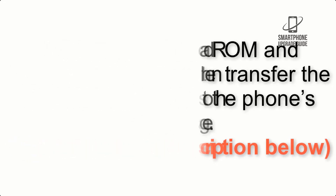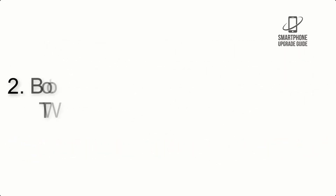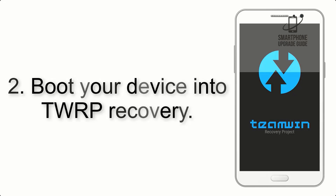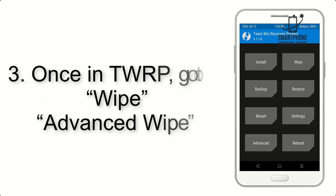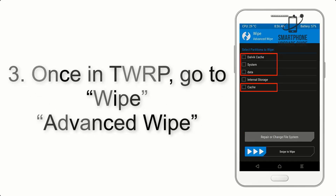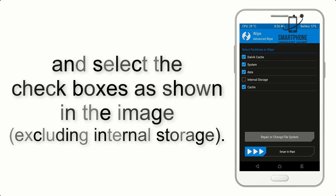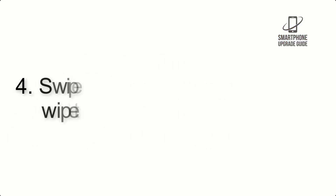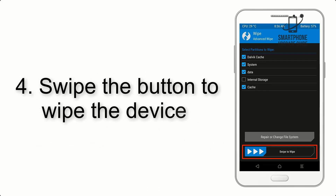Step 2: Boot your device into TWRP recovery. Once in TWRP, click on Wipe, then Advanced Wipe, and select the checkboxes as shown in the image, excluding internal storage.